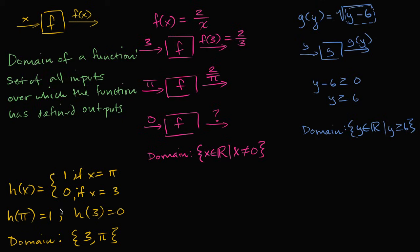So this hopefully starts to give you a flavor of why we care about domains. Not all functions are defined over all real numbers. Some are defined for only a small subset of real numbers, or only whole numbers, or natural numbers, or positive/negative numbers, or they have exceptions. We'll see that as we do more and more examples.